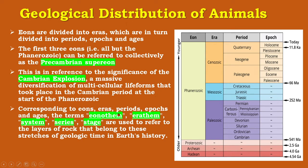Corresponding to eons, eras, periods, epochs and ages, the terms eonothem, erathem, system, series and stages are used to refer to the layers of rock that belong to these patterns of geologic time in Earth's history. In this order — from older to younger — the eons are Hadean, Archean, Proterozoic and Phanerozoic. Phanerozoic is again divided into three eras: Paleozoic, Mesozoic and Cenozoic, and these eras are further divided into periods, and periods into epochs.